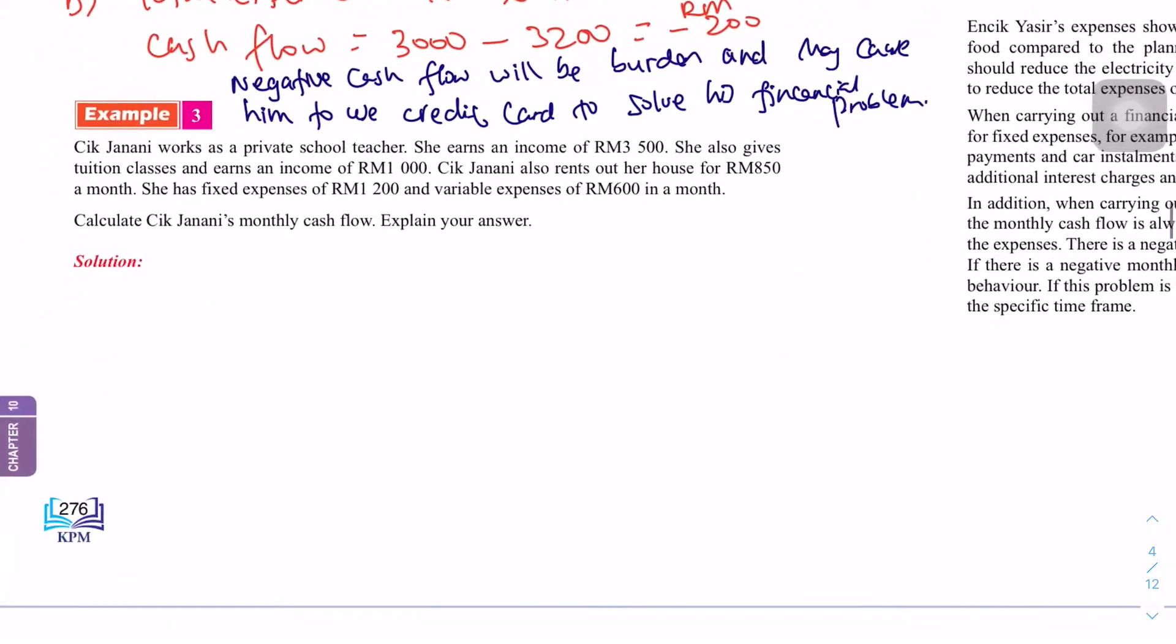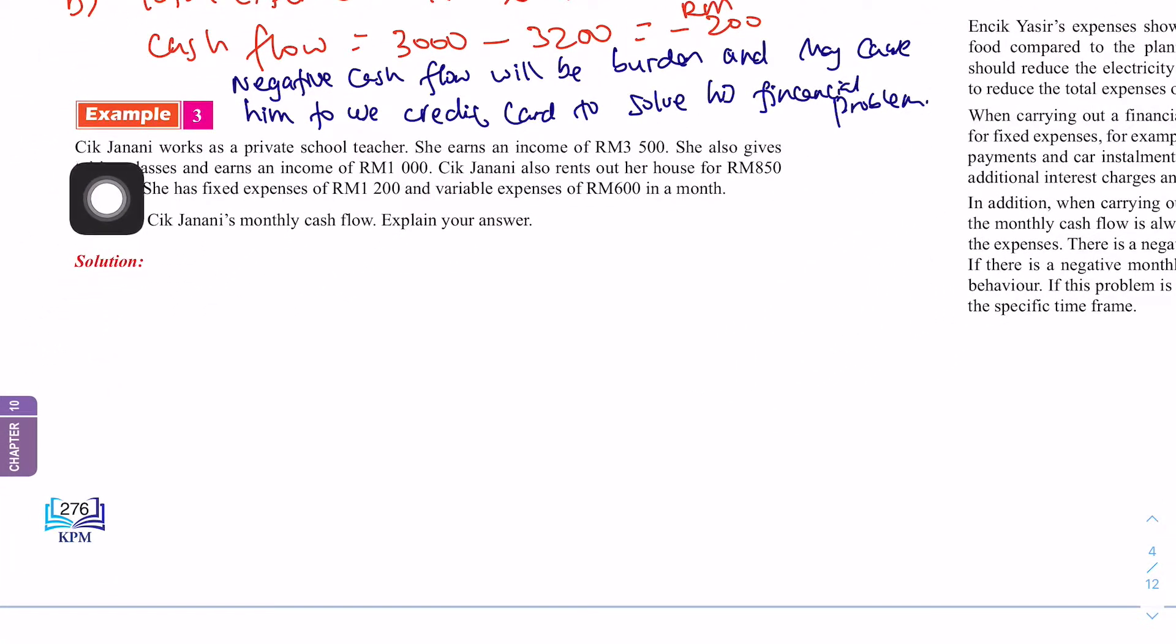So, let's look at example 3. Cik Janani works as a private school teacher. She earns an income of RM3,500. She also gives tuition classes and earns an income of RM1,000. Cik Janani also rents out her house for RM850 a month. She has fixed expenses of RM1,200 and variable expenses of RM600 in a month. So, calculate Cik Janani's monthly cash flow. Explain your answer.